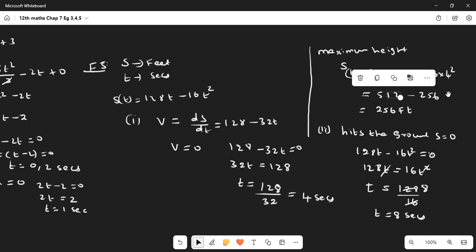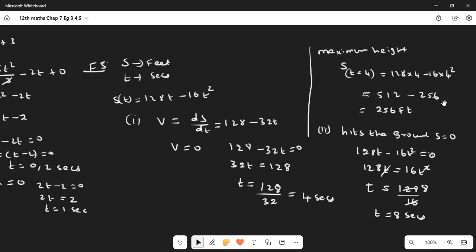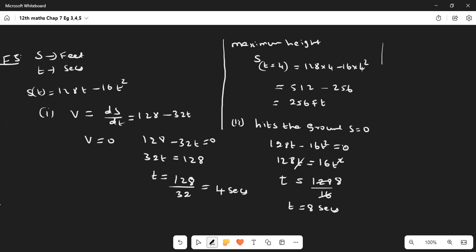At 8 seconds, what is the velocity? Velocity v = 128 - 32t. At t = 8, v = 128 - 32(8) = 128 - 256 = -128 feet per second. The particle hits the ground at t = 8 seconds, and the velocity at which it hits the ground is -128 feet per second.